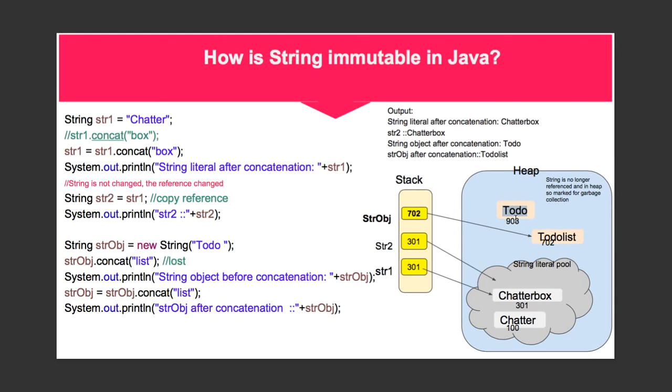Now, why is it that string is made immutable in Java? For that, let's see this example. We saw that str2 and str1 here both are pointing to the same object called Chatterbox.